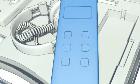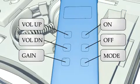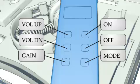This is the on-off switch. The volume up and down increases or decreases the volume of sound in the headphones. The gain increases sensitivity.